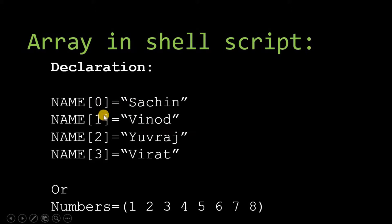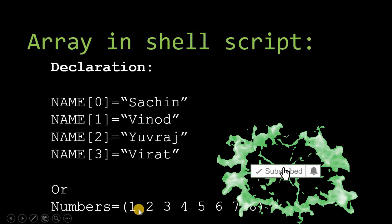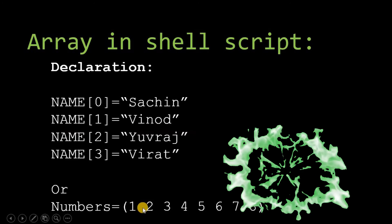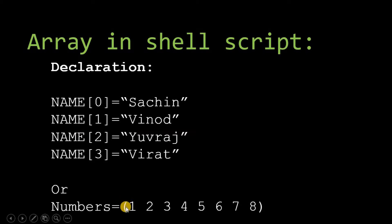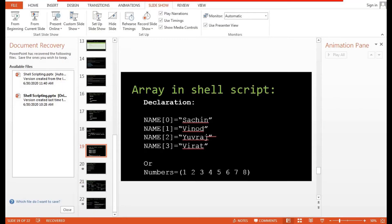For example, 'name[0]' is 'Sachin', 'name[1]' is 'Vinod', 'name[2]' is 'Yuvraj', 'name[3]' is 'Viraj'. You can declare array elements individually, or declare them all together. Combined declaration syntax: 'numbers=(1 2 3 4 5 6 7 8)' — round brackets are used and elements are separated by spaces, not commas. Note that unlike C programming which uses square brackets, shell scripting uses round brackets to define array elements.